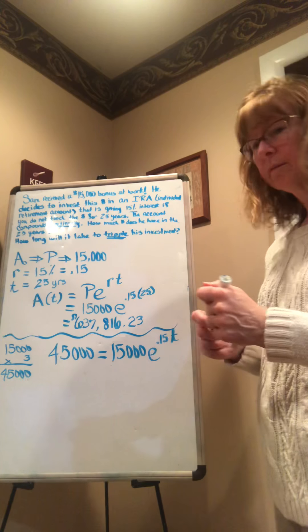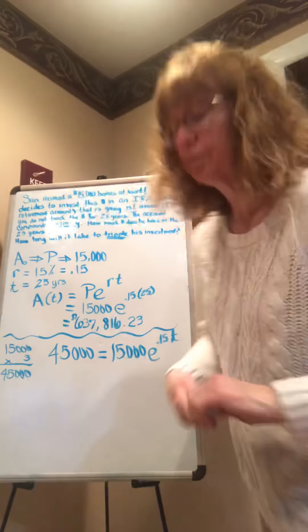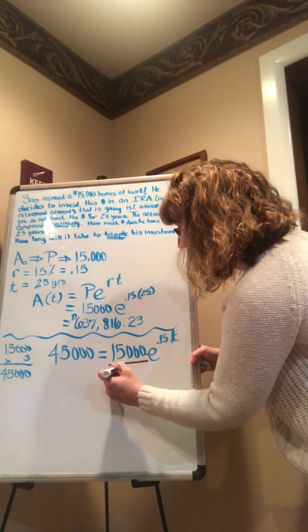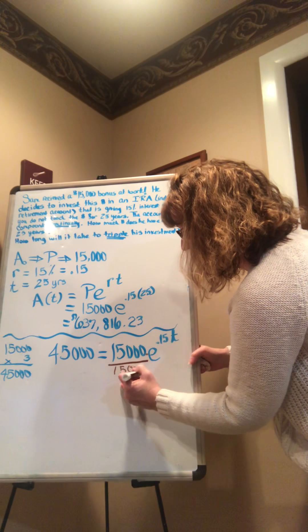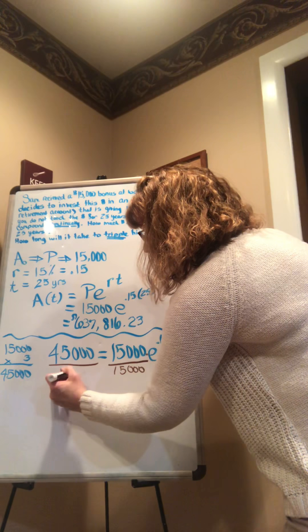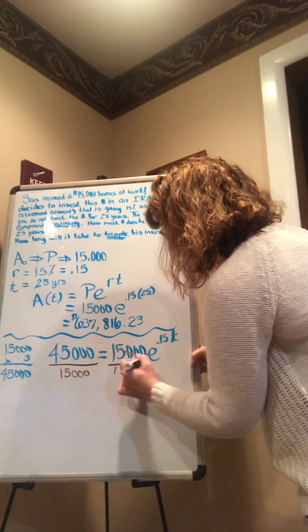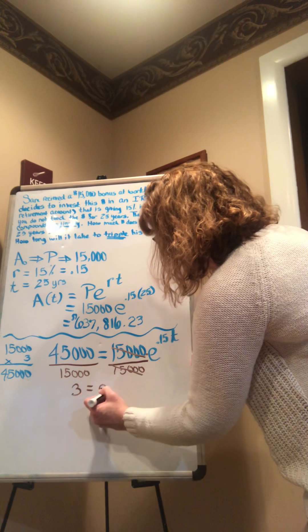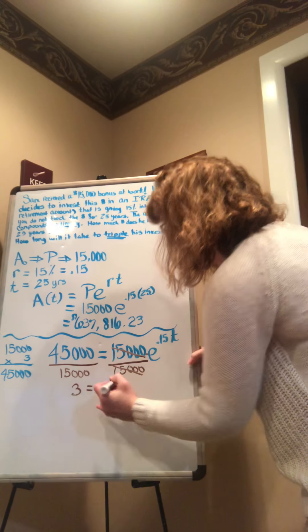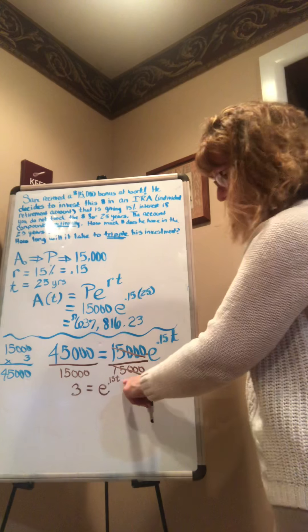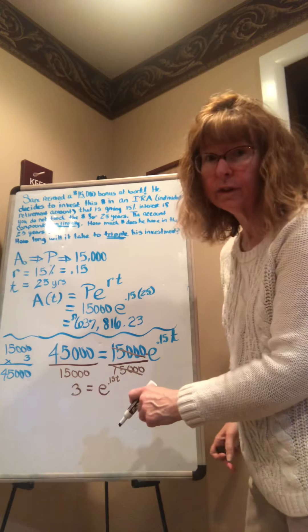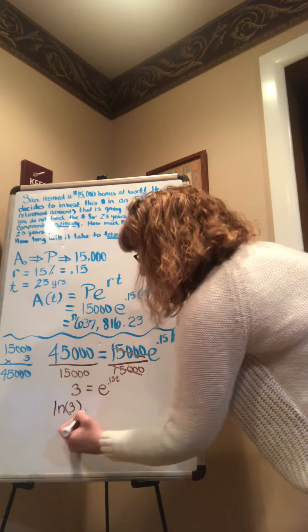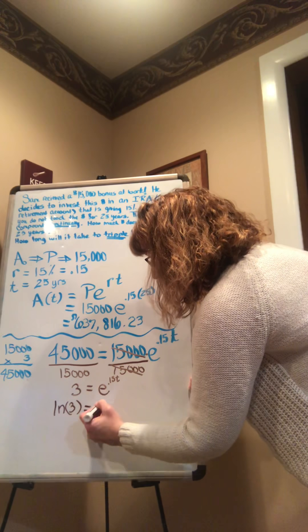So you take your calculator, and this is what we are now typing in. We have our 15,000, we are hitting second and the natural log key for E, we're putting in the .15 and multiplying it by 25, coming out of the exponent, hitting enter — and wow, we made a lot of money. The amount is $637,816.23.